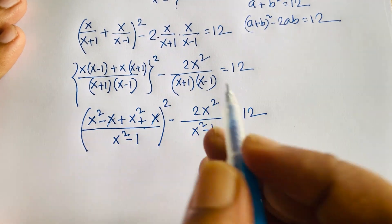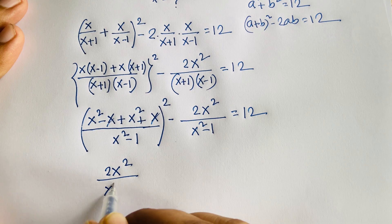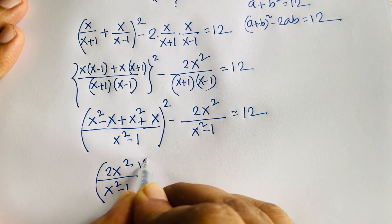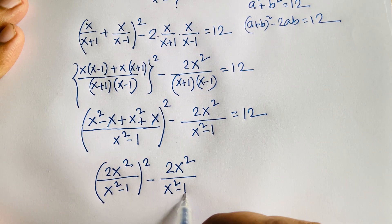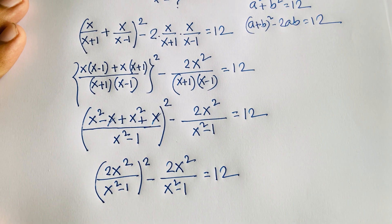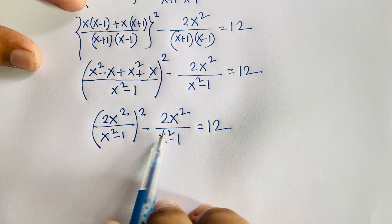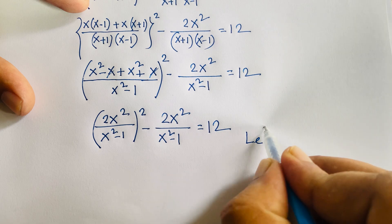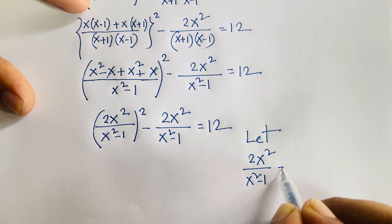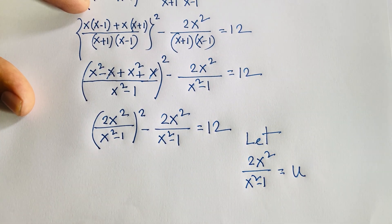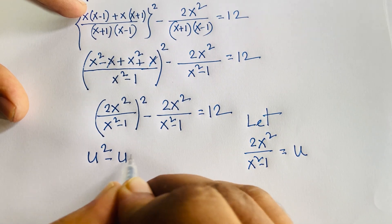The x terms cancel appropriately, and we get 2x²/(x²-1) whole squared minus 2x²/(x²-1) equals 12. Since both terms share the same expression, let u = 2x²/(x²-1). Then we have u² minus u equals 12.